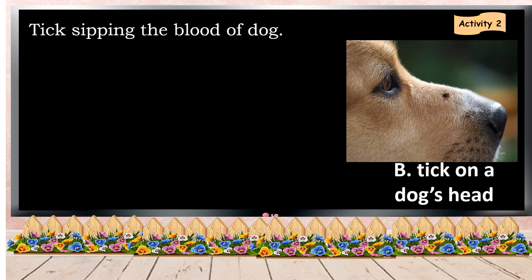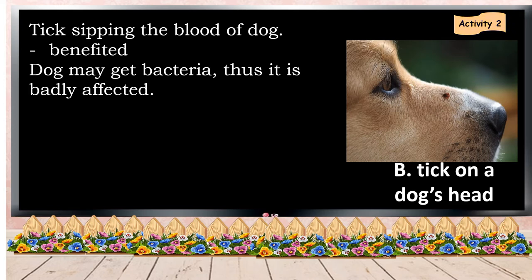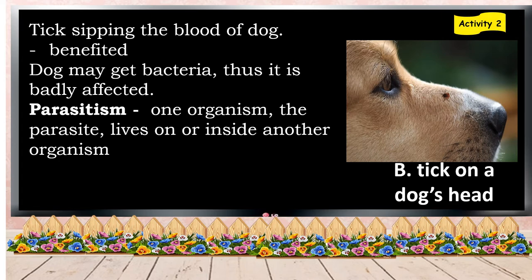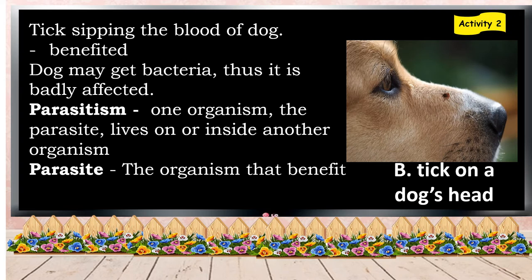You can see in the picture that the tick is sipping the blood of the dog. The tick is the one that benefits, and the dog may get bacteria due to the bite of the tick. Their relationship is called parasitism because one organism, which is the parasite, lives on or inside another organism. Just like the tick, it lives on the body of the dog. The dog is the one that is harmed and is the host, while the parasite is the organism that benefits, which is the tick.